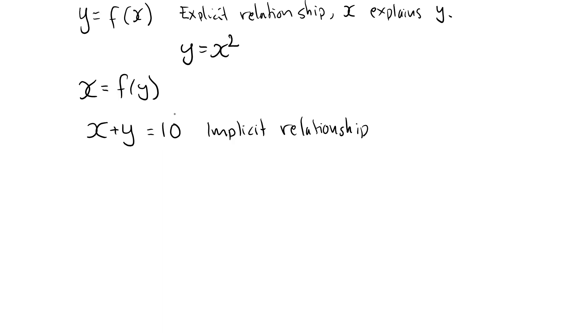we can take an implicit relationship and convert it into an explicit one. This is such an example. If I want to make this explicit in y, for example, I simply solve it for y by moving x over to the other side. So y is 10 minus x. Now we made it explicit in y.